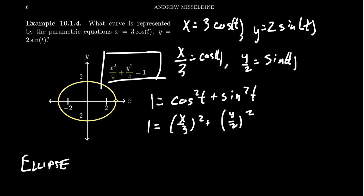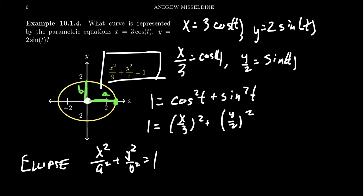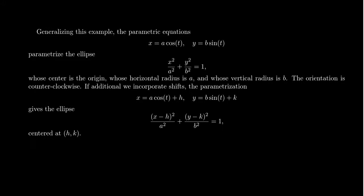An ellipse is like a circle that someone sat on. It's generally given by x squared over a squared plus y squared over b squared equals 1 — an ellipse centered at the origin. The distance from the center to the horizontal point is a, the distance upward to the top point is b — I refer to these as the horizontal and vertical radii of the ellipse. A circle is just an ellipse with a uniform radius. This parameterization using a cosine of t for x and b sine of t for y still gives a counterclockwise orientation.